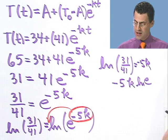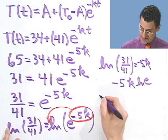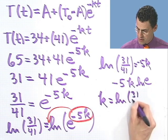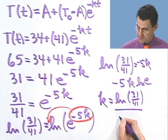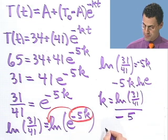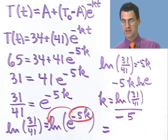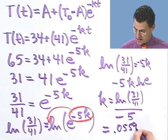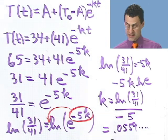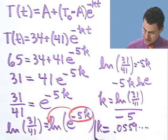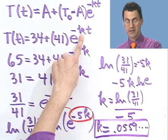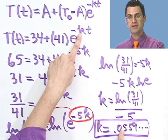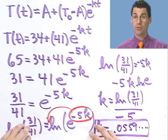And if I want to solve this, all I've got to do now is divide by minus 5. So I see that k, that constant, equals the natural log of 31 over 41, all divided by minus 5. And we can plug that into a calculator and see what the value is, and it turns out the value is .0559 stuff. So that's the constant. Now, I haven't answered any questions yet, but I now have a complete formula that I can use. So all this work was just to find that mysterious constant that we knew existed, but we didn't know what it was.